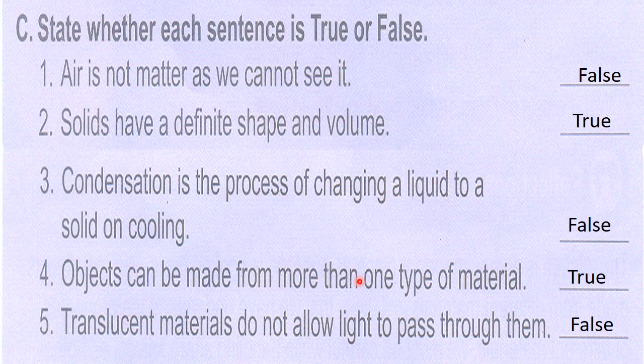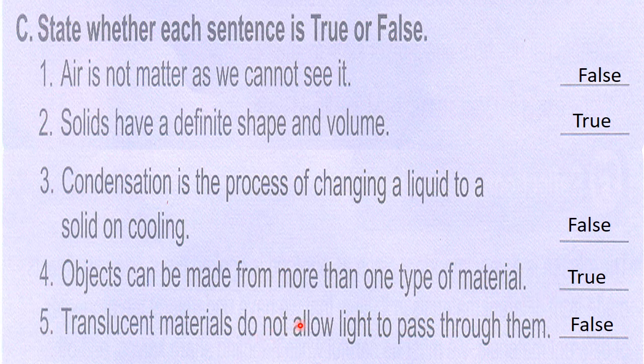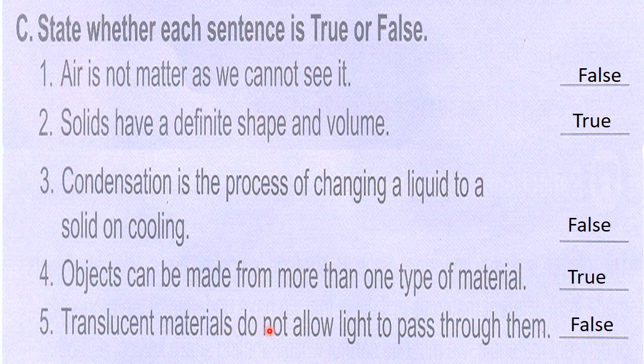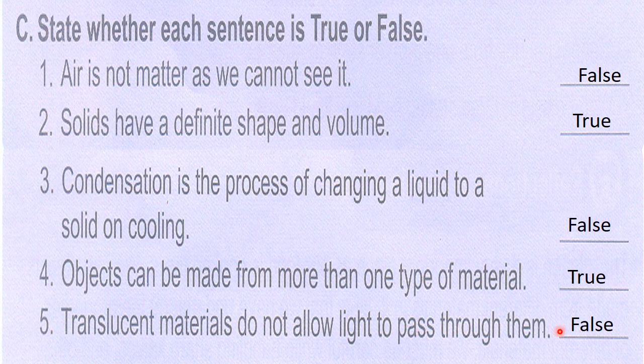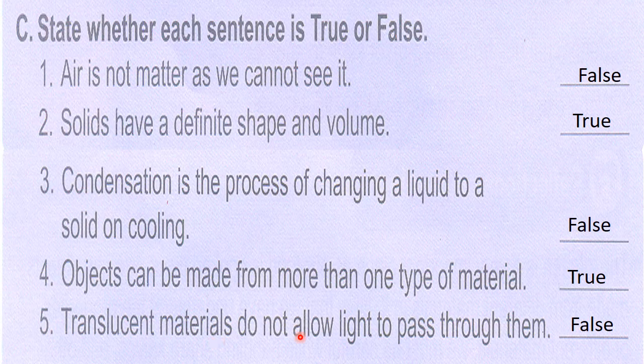Objects can be made from more than one type of material - this is true, this is partially true. Objects can be made from same type of materials and from different type of materials also, right. Translucent materials do not allow light to pass through them - this is false because translucent materials allow the light to pass but only partially.